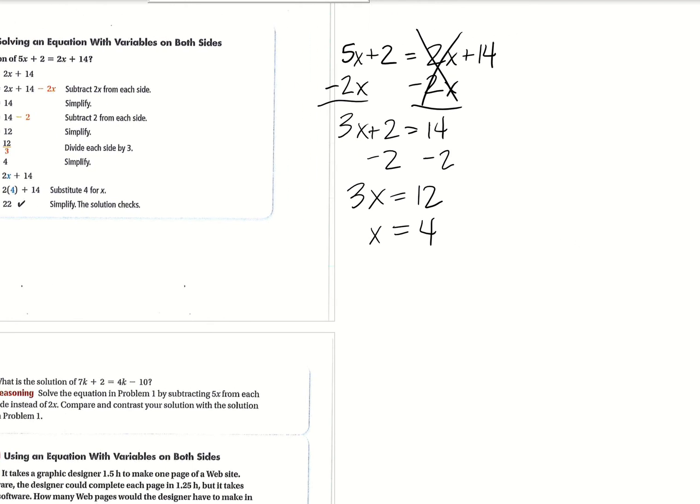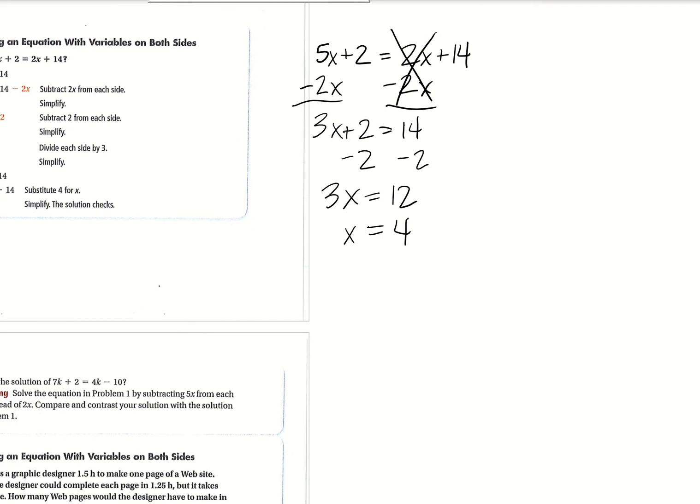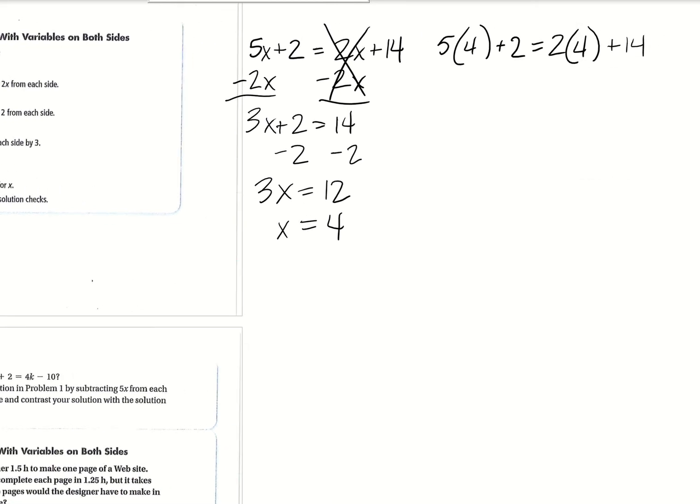Don't forget, you can check this by plugging that 4 into the original equation. So 5 times 4 is 20 plus 2, and then 2 times 4 is 8 plus 14. 20 plus 2 is 22. 8 plus 14 is 22. So we are good. x equals 4.